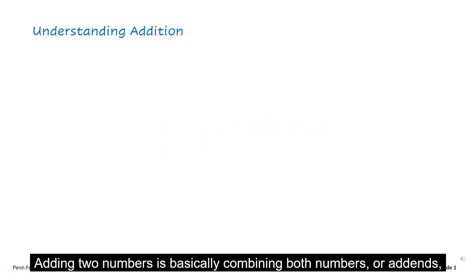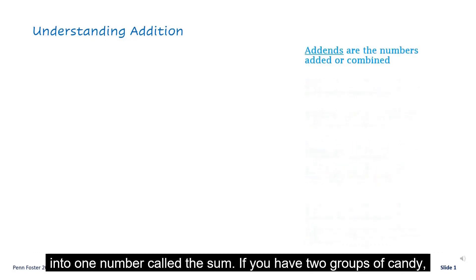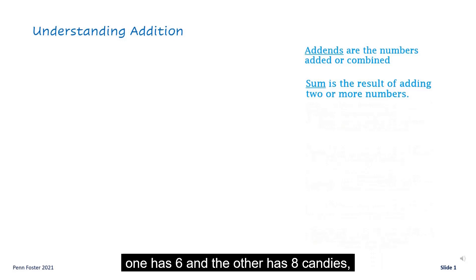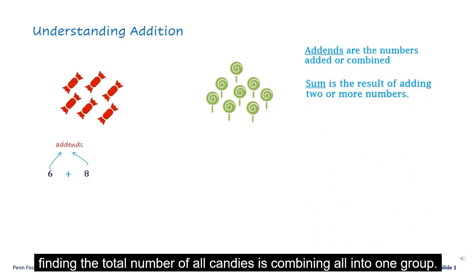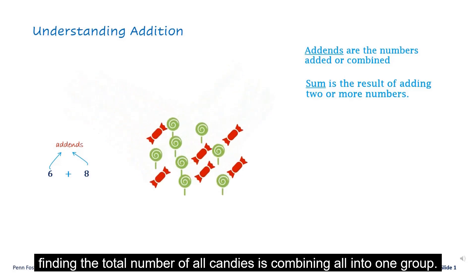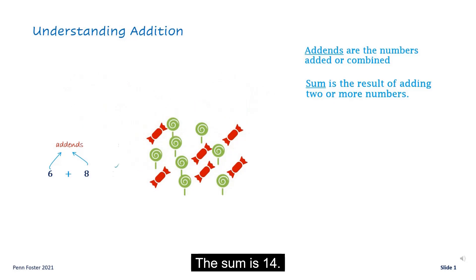Adding two numbers is basically combining both numbers, or addends, into one number called the sum. If you have two groups of candy, one has six and the other has eight candies, finding the total number of all candies is combining all into one group. The sum is 14.